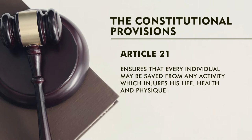Whenever we think about the legal perspective in India, we derive our goals, duties, and responsibilities from our constitution. When you talk about the conservation of nature with your students, first you need to tell them what are the constitutional provisions for conservation of nature in India. If you see the constitution, there are three very important articles: Article 21, Article 48A, and Article 51A(g). Article 21 basically ensures that every individual may be saved from any activity which injures his life, health, or physique.